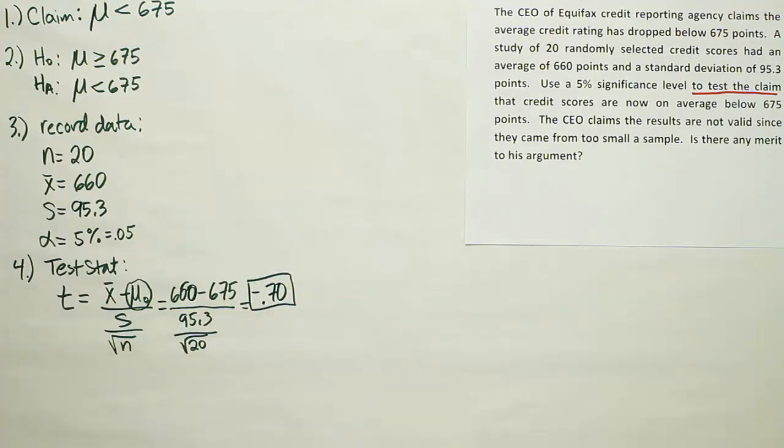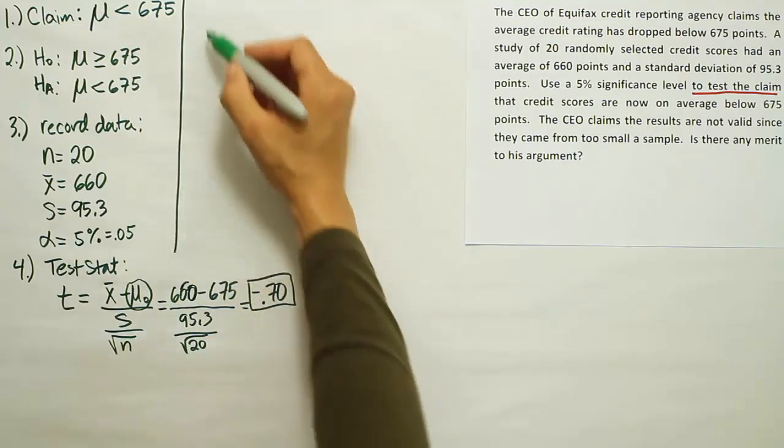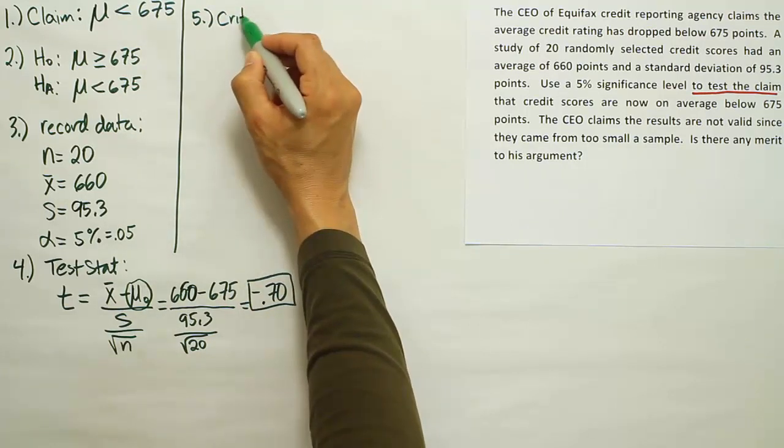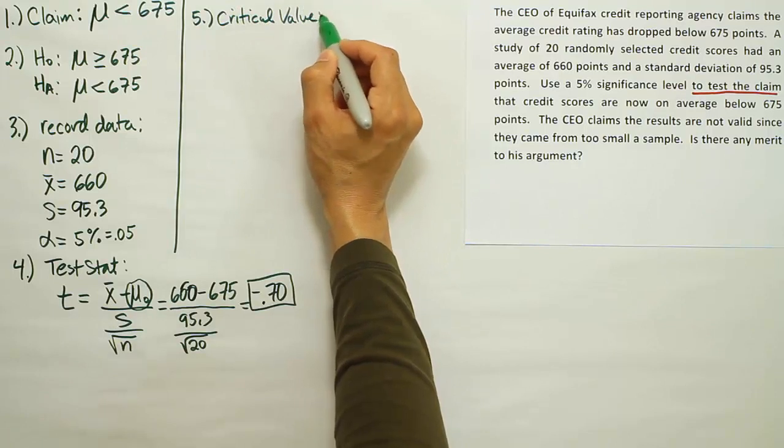So with that as our test stat, our next step is going to be to find the critical value to compare this test stat against. We can tell this is a very moderate test stat. It's not extreme in any way. In fact, it's real close to 0, or it's close to negative 1. But either way, it's not enough to reject H0, most likely. Let's go find that out for sure by finding the critical value. That's step 5.